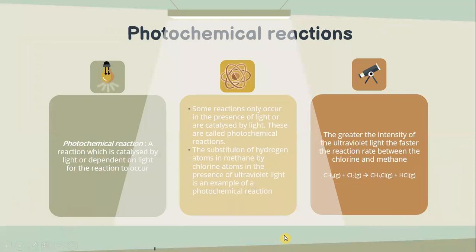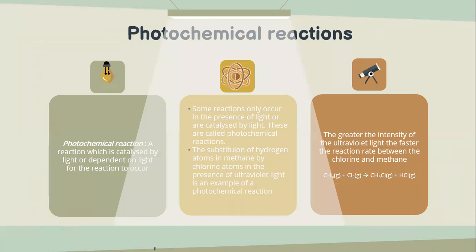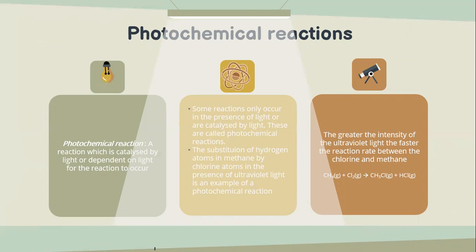Photochemical reaction is one example of reaction rate and change in catalyst. A photochemical reaction is a reaction which is catalysed by light, or is dependent on light for the reaction to occur. Some reactions only occur in the presence of light or are catalysed by light — these are called photochemical reactions. The substitution of hydrogen atoms in methane by chlorine atoms in the presence of ultraviolet light is an example of a photochemical reaction, where the greater the intensity of ultraviolet light, the faster the reaction rate between chlorine and methane.